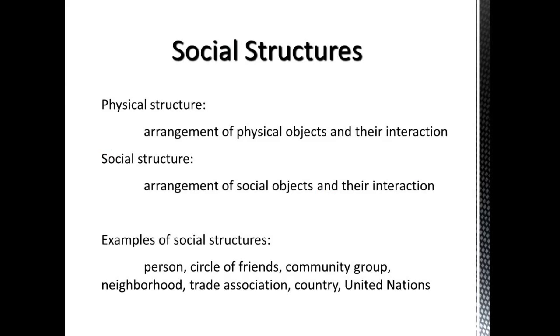What are some examples of these social structures? You have your basic unit of a person, and you get some friendships and a circle of friends — social circles. You can get a community group like the Lions Club or Rotary. You can get a neighborhood, a trade association, a corporation, a union, or a country. You can get something like the United Nations or NATO, which spans multiple countries. The interaction that those countries have with each other creates something called the United Nations, and the particular way that happens is the social structure.